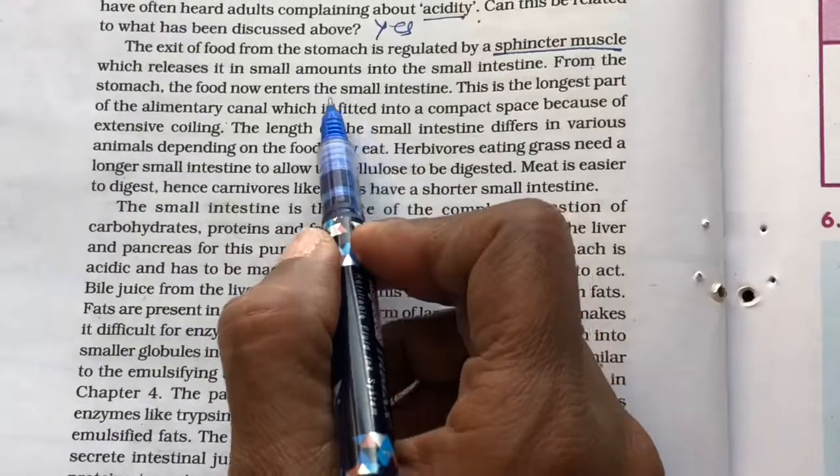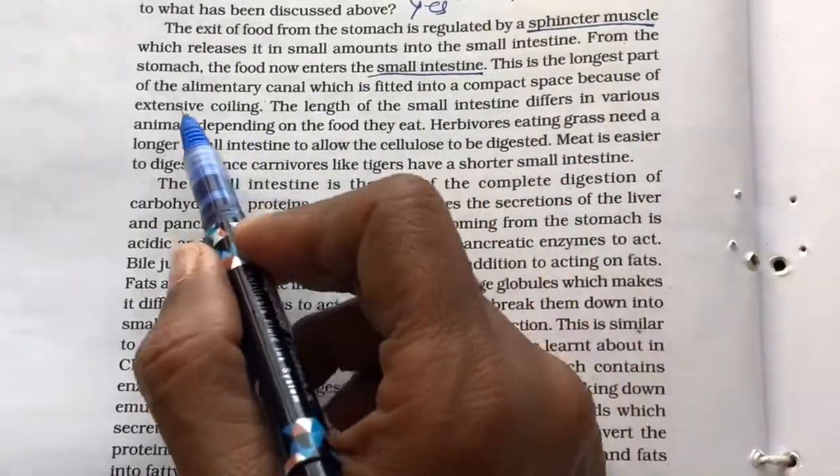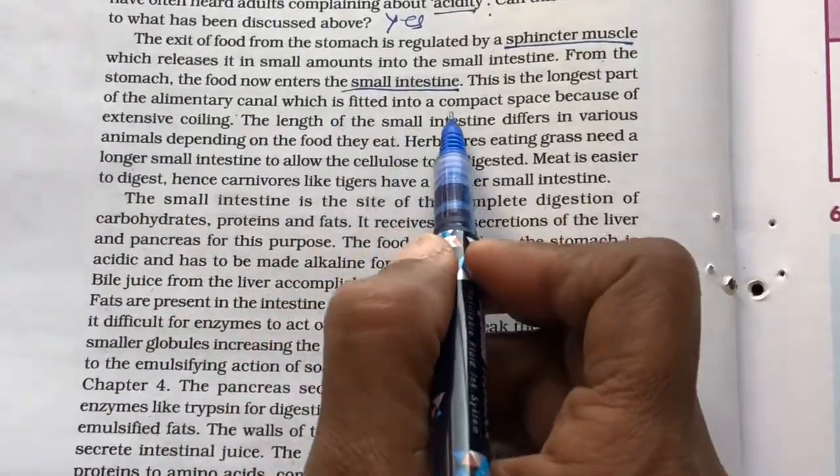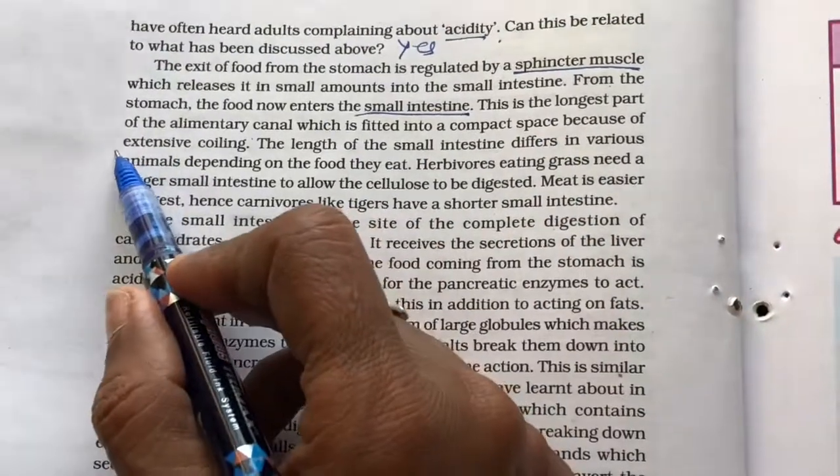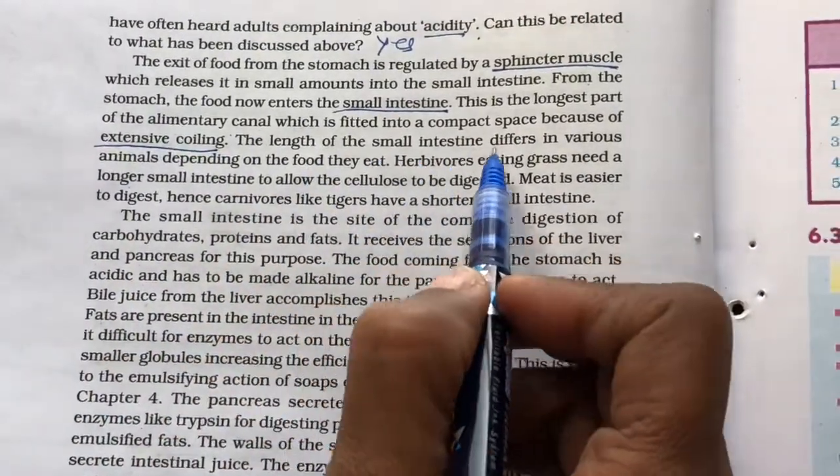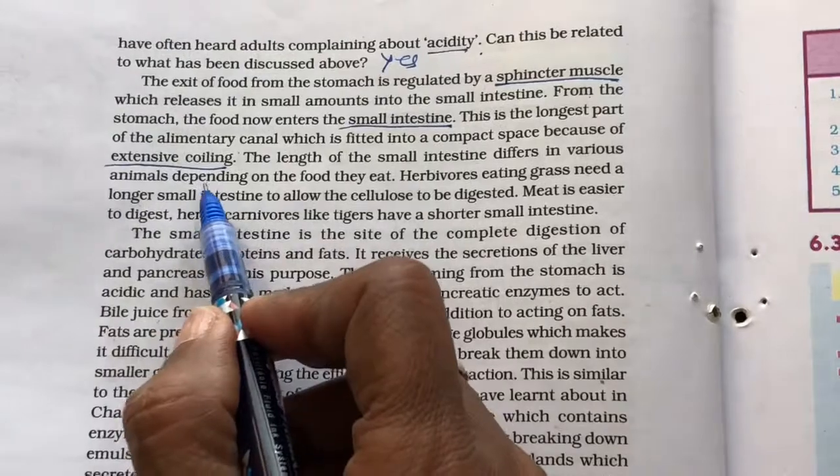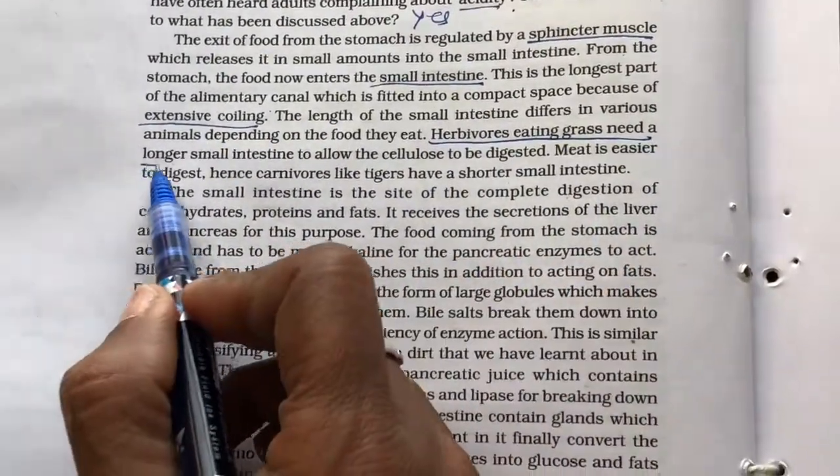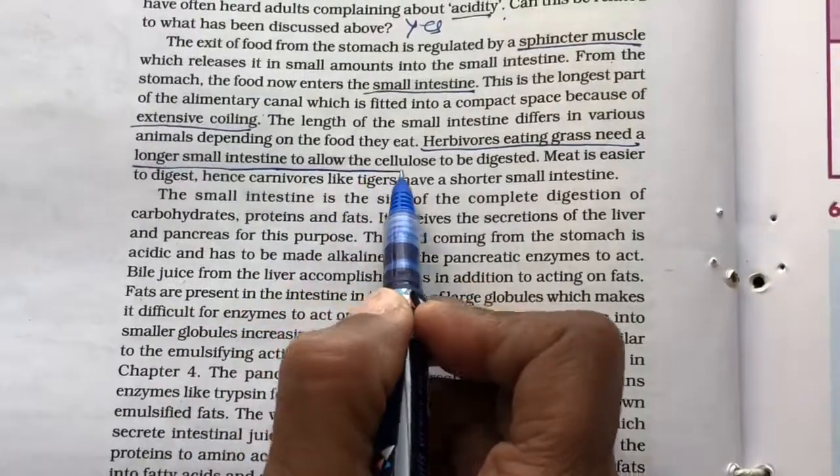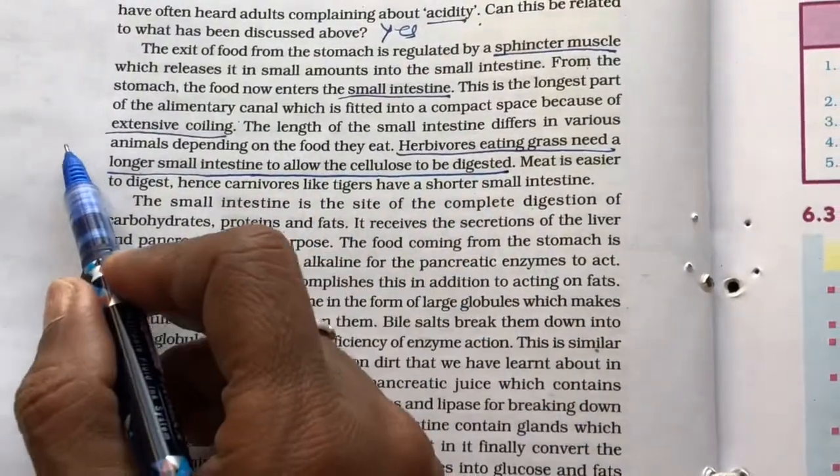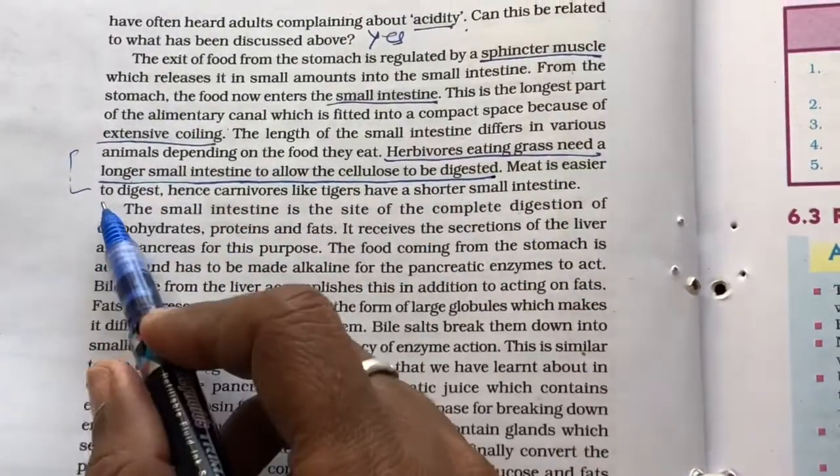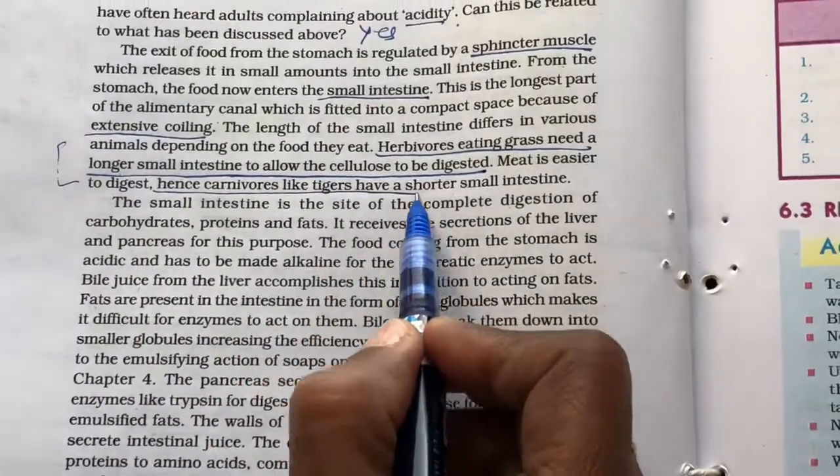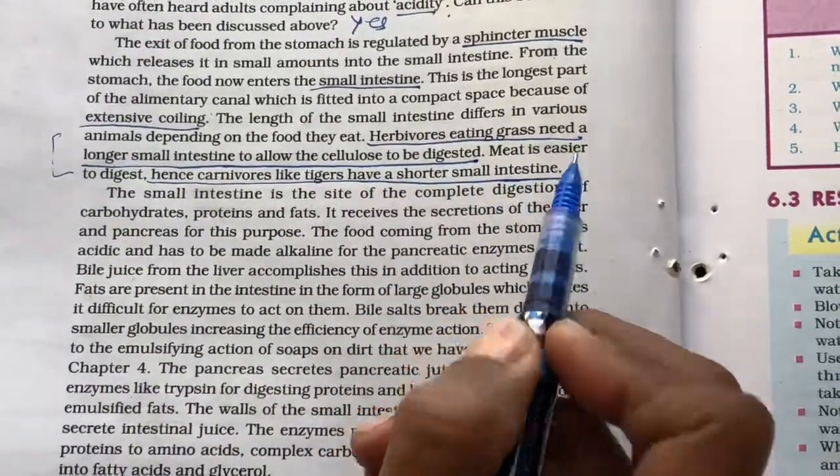From the stomach, the food now enters into the small intestine. This is the longest part of the alimentary canal which is fitted into a compact space because of the extensive coiling. The length of the small intestine differs in various animals depending on the food they eat. Herbivores eating grass need a longer small intestine to allow the cellulose to be digested. Meat is easier to digest. Hence, the carnivores like tigers have a shorter small intestine.